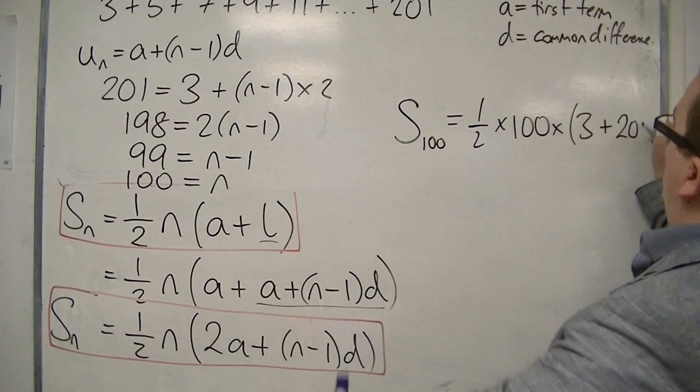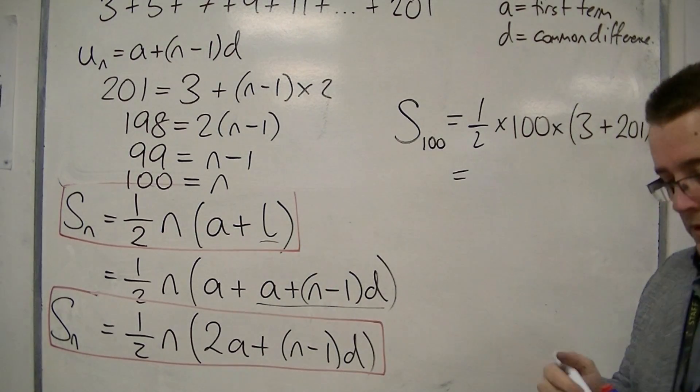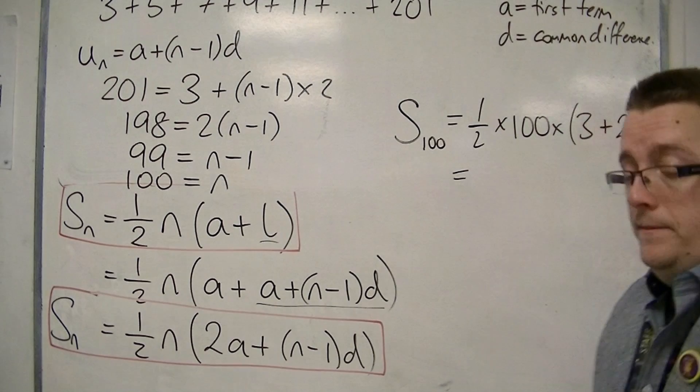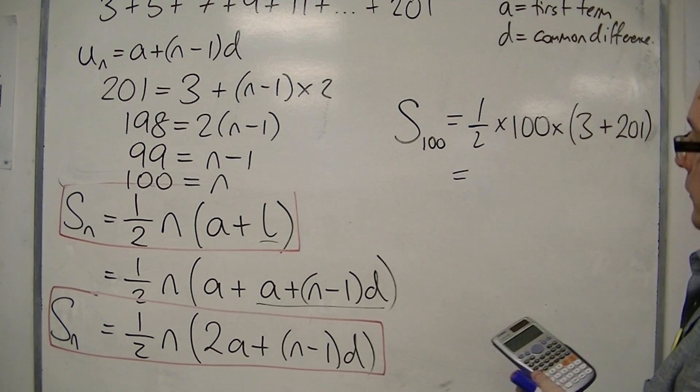plus the last term, 201. Plug those into my calculator. So 1 half of 100 times 3 plus 201 is 10,200.